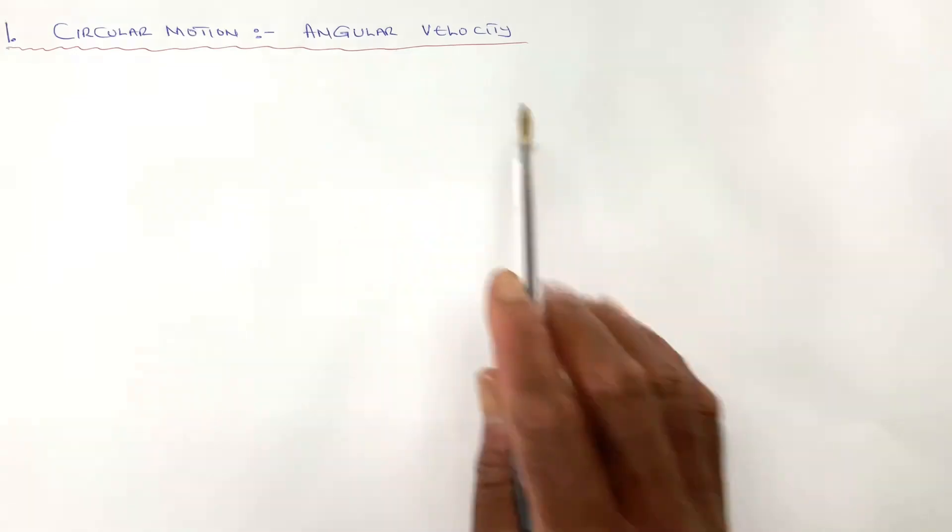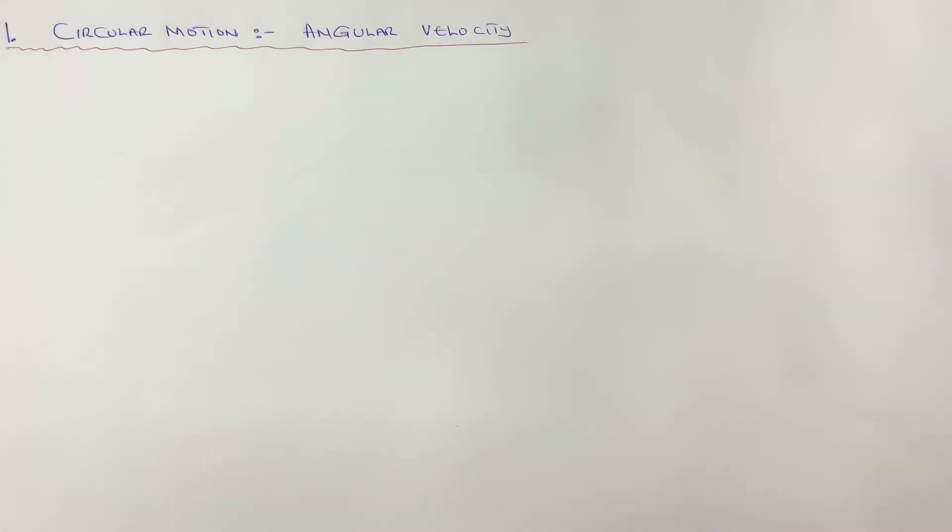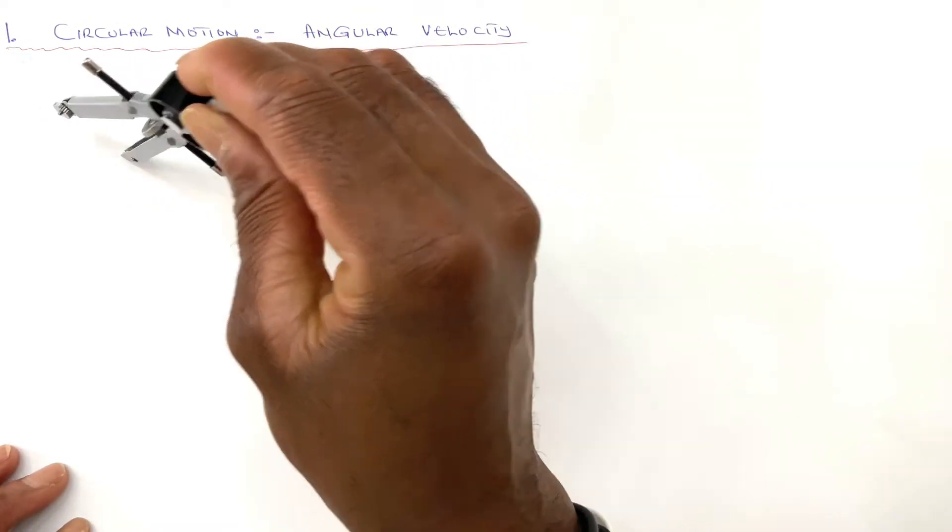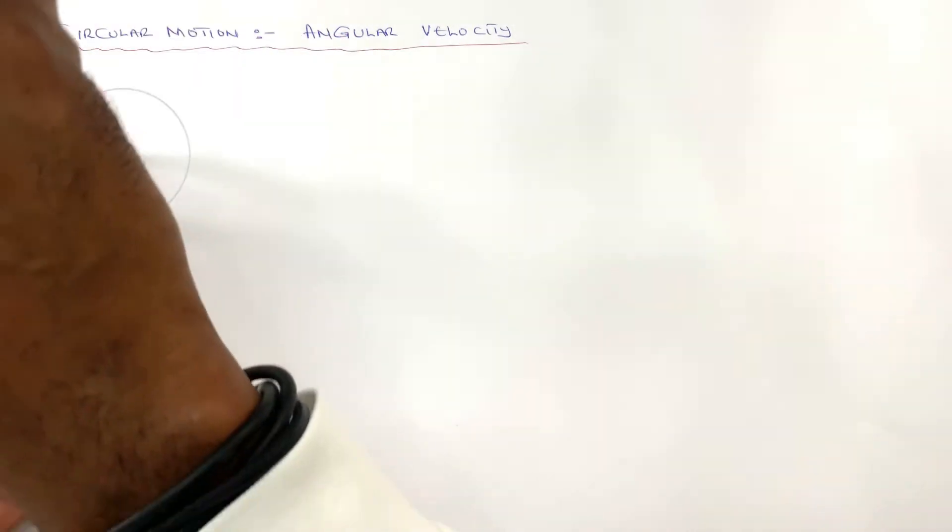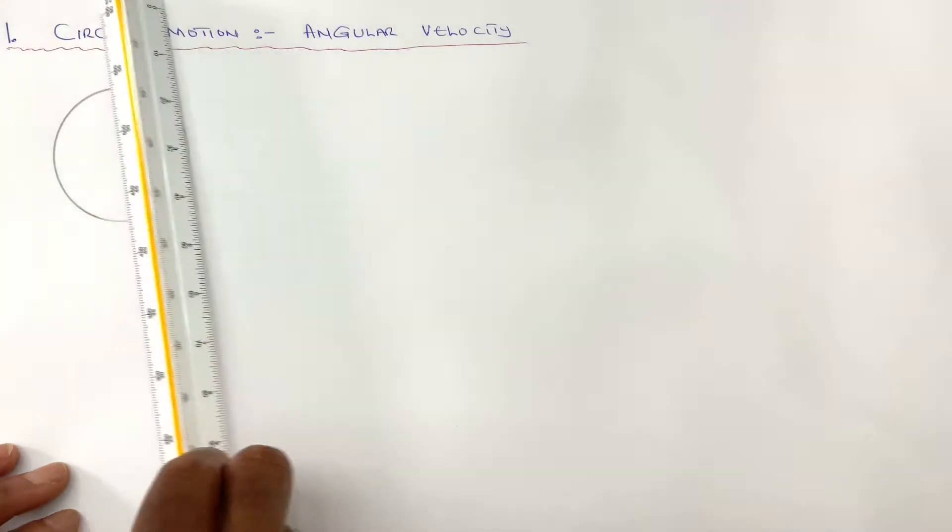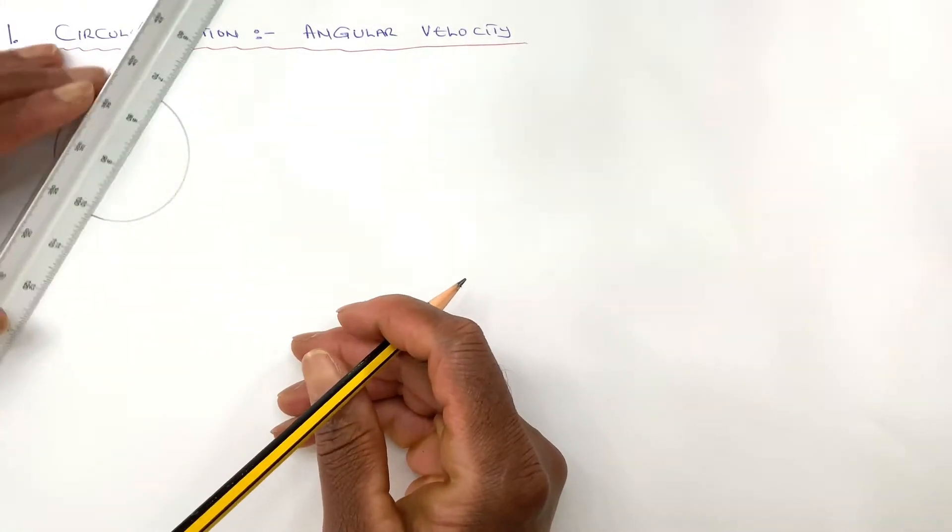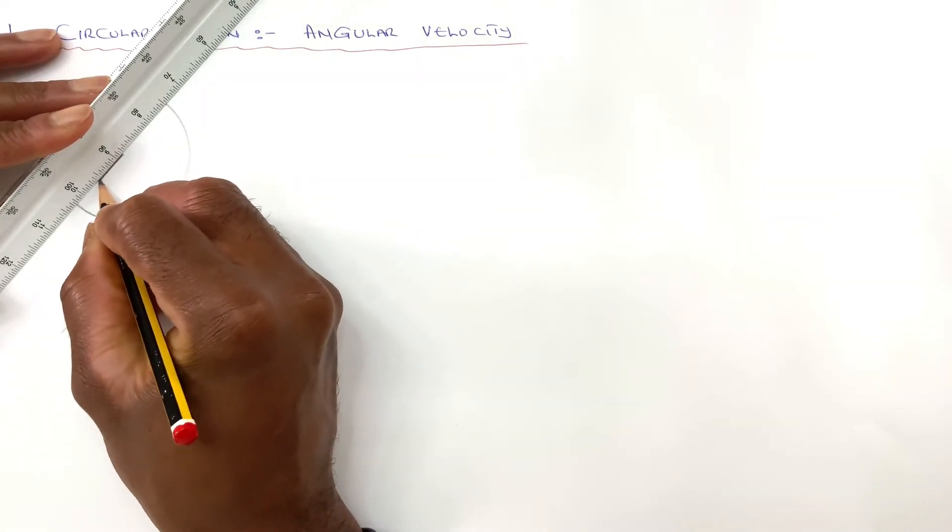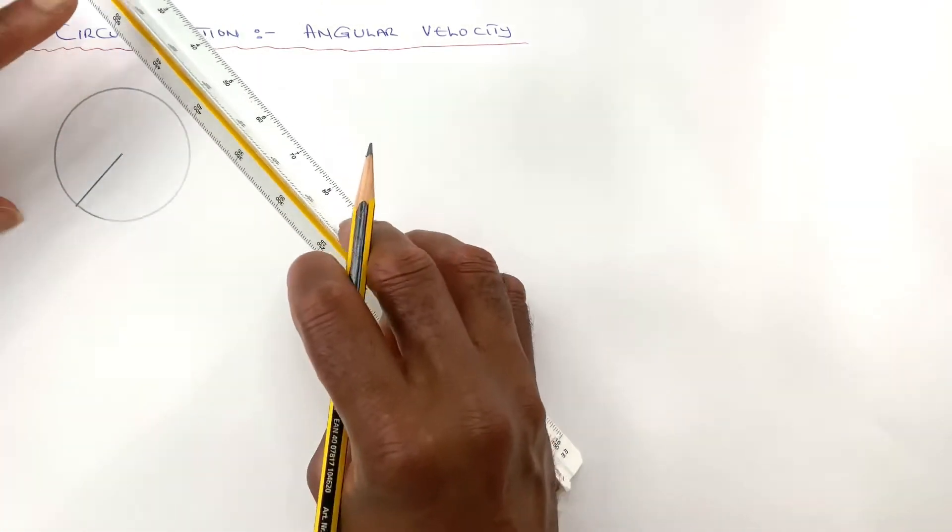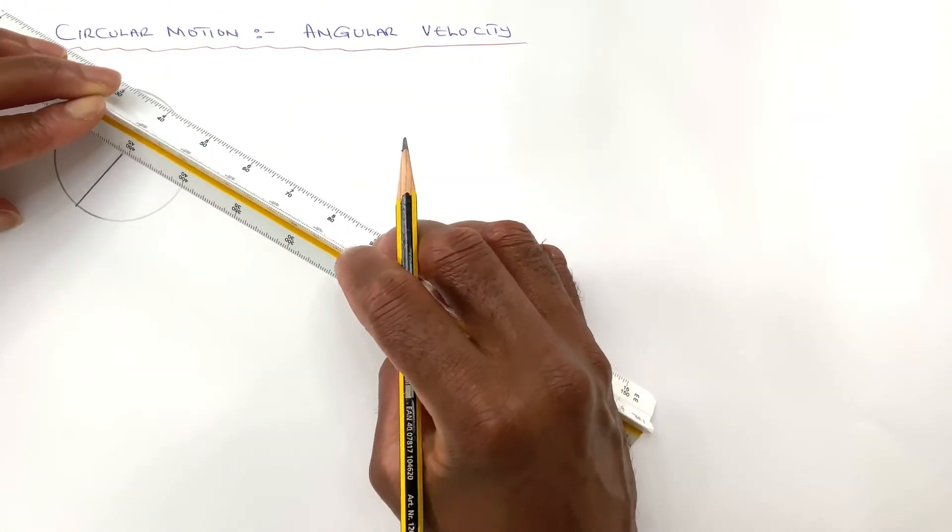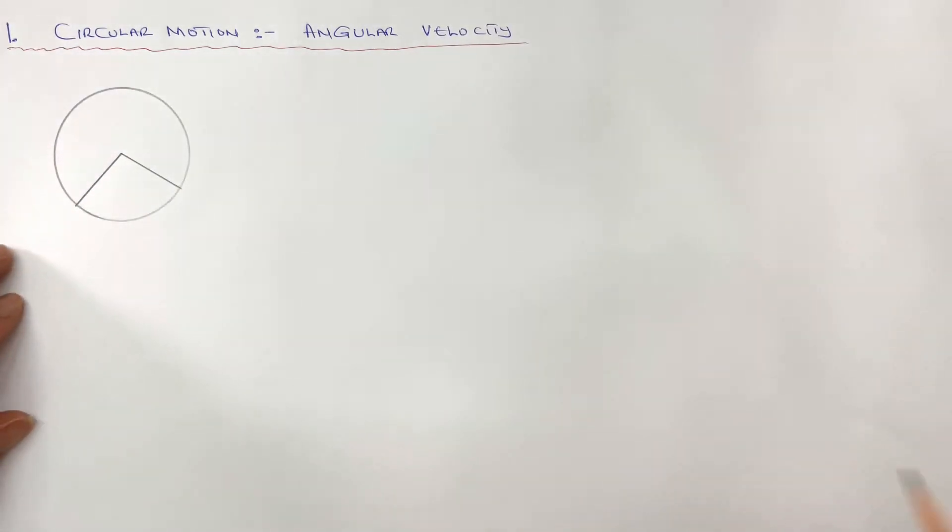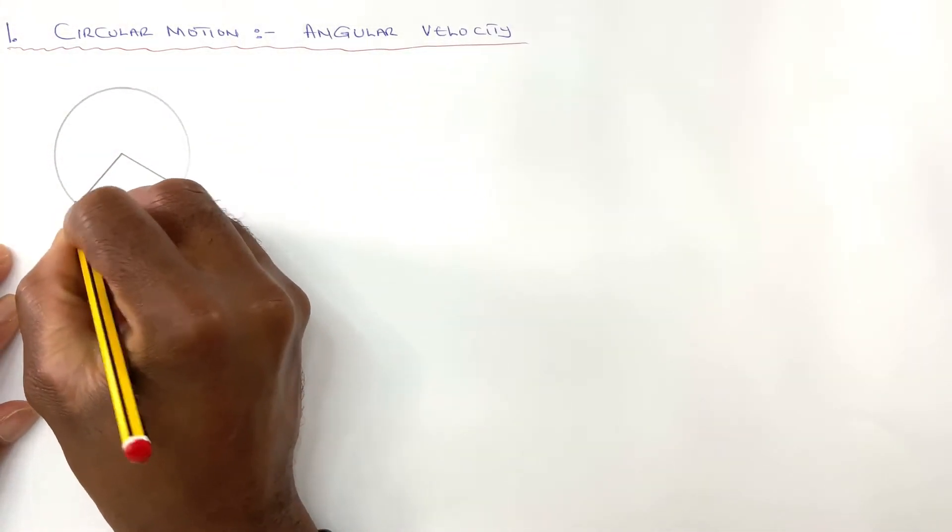Circular motion. Angular velocity. If an object is moving in a circular motion, I draw the radius here from center to circumference. The object is driving from A to B.